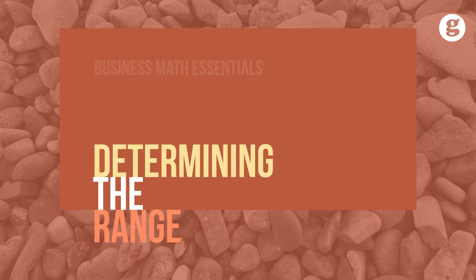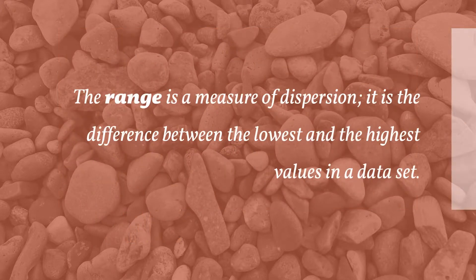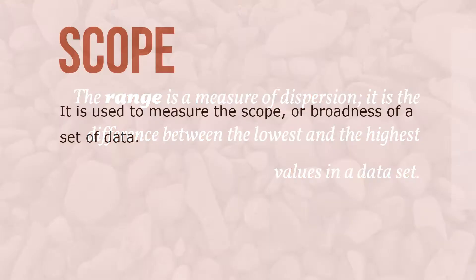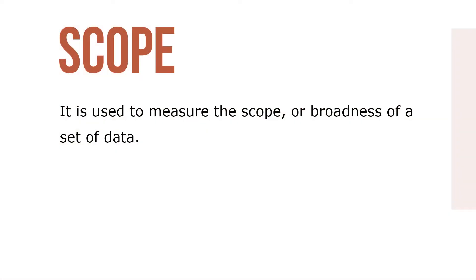Although it doesn't measure central tendency as the mean, median, and mode do, the range is another useful measure in statistics. The range is a measure of dispersion — it's the difference between the lowest and the highest values in a data set. It's used to measure the scope or broadness of a set of data.